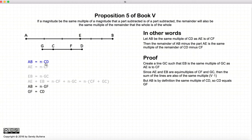But AB is equal to N times CD, AB is equal to N times GF. So in other words, CD is equal to GF or GF is equal to CD.